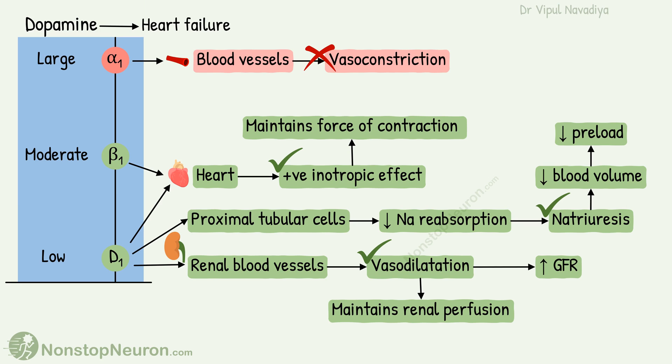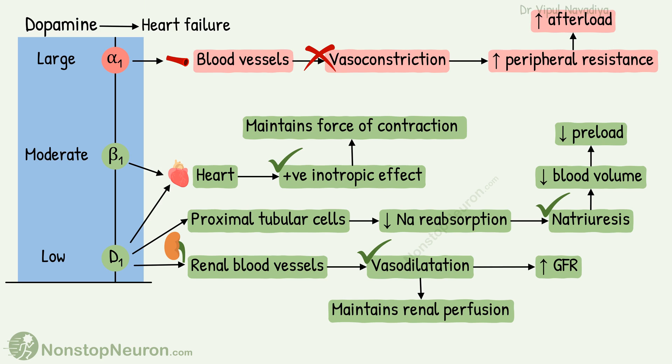However, vasoconstriction is not desired in heart failure. Vasoconstriction increases peripheral resistance, which increases afterload on the heart and makes it difficult for the failing heart to pump blood. Because of this, dopamine should be given only in low to moderate doses in heart failure — not in large doses — so that we get only the desired effects and not the harmful ones.